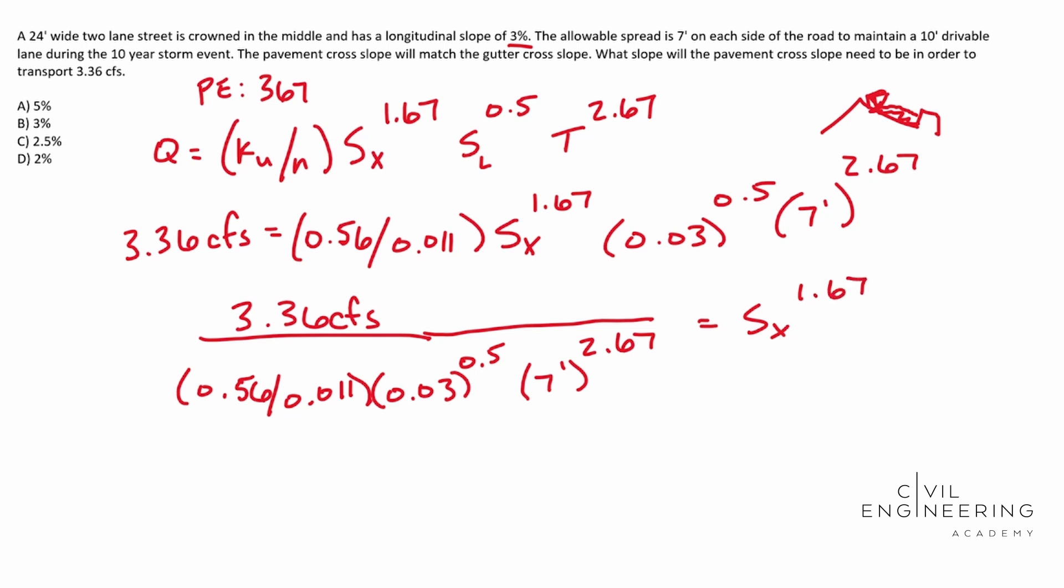And all of this ends up being equal to the cross slope to the 1.67 power. So whenever you simplify this out, you should end up with something similar to 0.00211 is equal to the cross slope to the 1.67 power. And so when you solve for the cross slope, you should end up with...